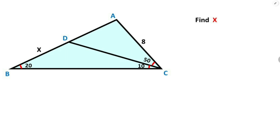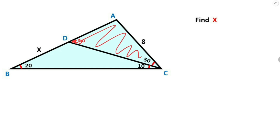First of all, we know that two interior angles equal one external angle. So this angle must be equal to 30 degrees. Then if you focus on this triangle, we know that the sum of the interior angles equals 180 degrees, therefore 100 degrees is left here.